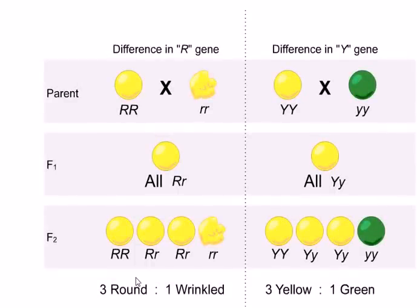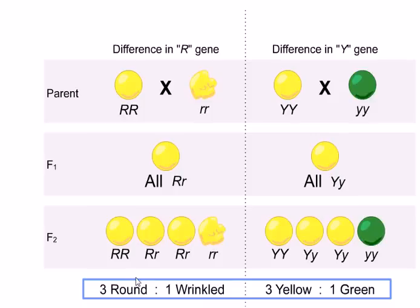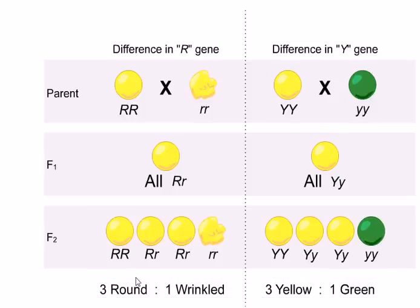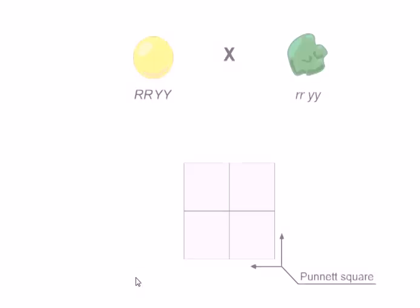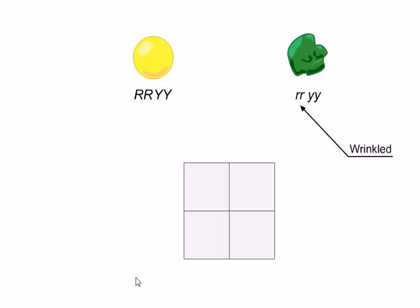The two series of crosses shown here illustrate a mating of peas in which the parent plants differ in two traits: round versus wrinkled texture and yellow versus green color. Each cross yields a three-to-one ratio of phenotypes in the F2 generation. The round yellow pea has dominant R alleles for round phenotype and dominant Y alleles for yellow phenotype. The wrinkled green pea has recessive R alleles for wrinkled phenotype and recessive Y alleles for green phenotype.